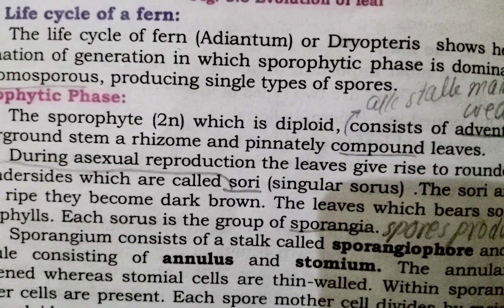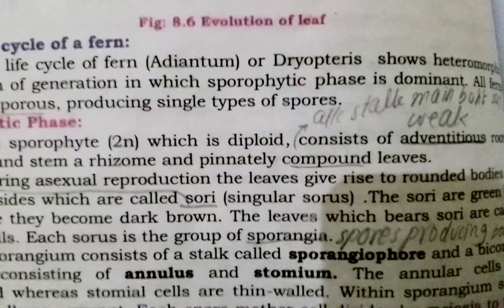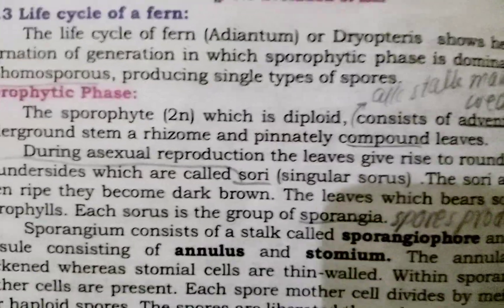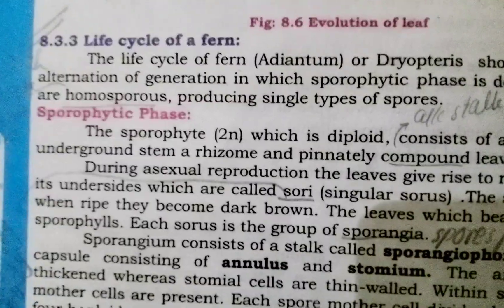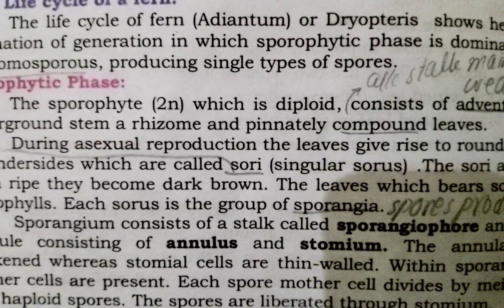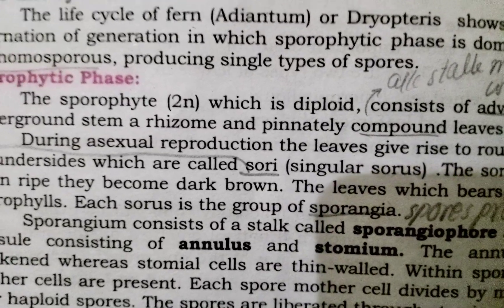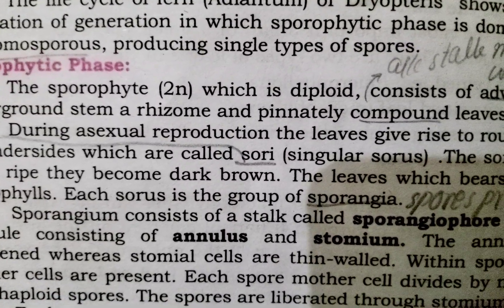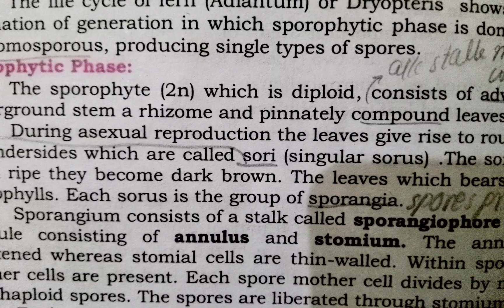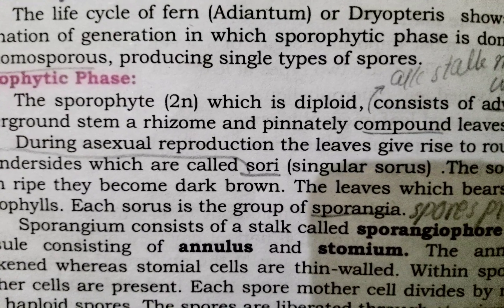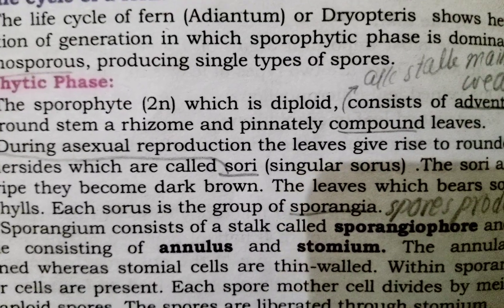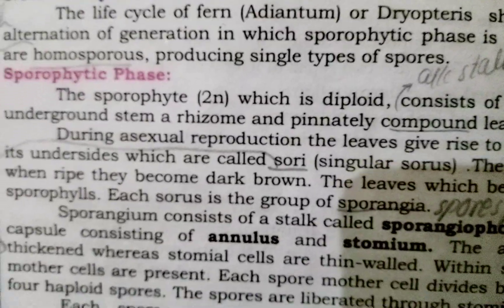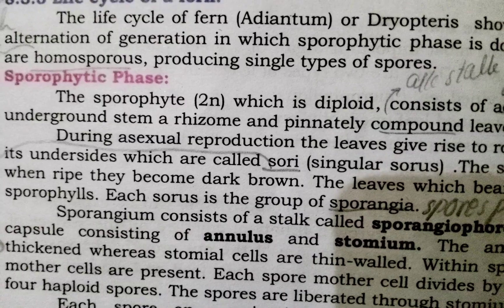During asexual reproduction, the leaves give rise to rounded bodies on their undersides which are called sori. The leaves produce and give rise to structures during asexual reproduction which are called sori.